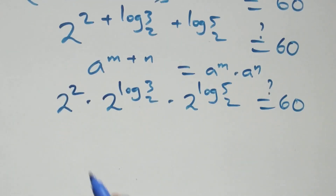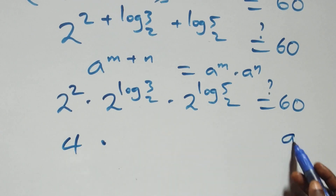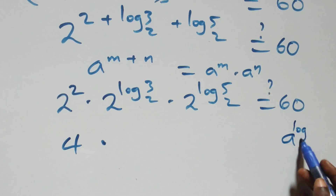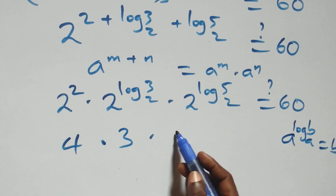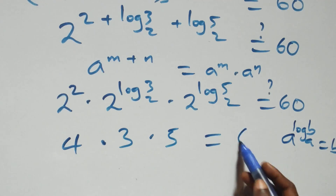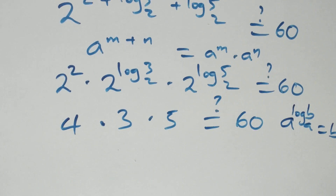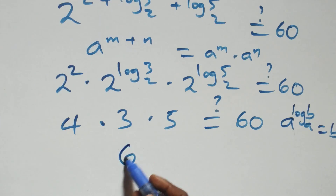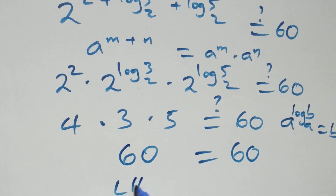Now 2 squared is 4. Also, from the logarithm law, a raised to power log_a(b) equals b. So 2 raised to power log base 2 of 3 equals 3, and 2 raised to power log base 2 of 5 equals 5. Therefore 4 times 3 is 12, and 12 times 5 is 60, which equals 60 on the right-hand side.